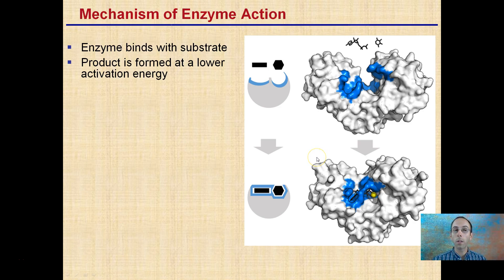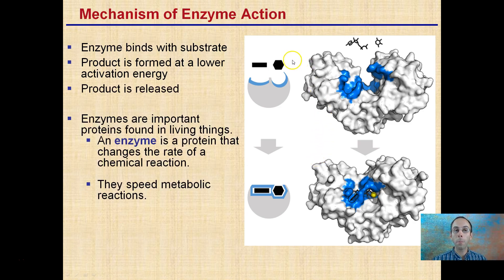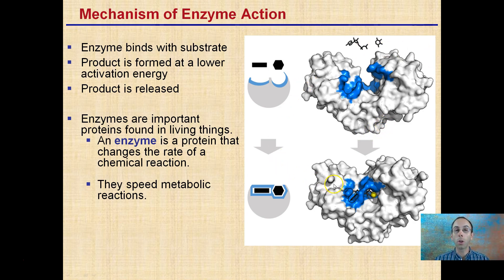Now, the mechanisms for enzyme action: the enzyme must bind to the substrate, the product is formed at a lower activation energy, and the product is then released. Enzymes are important proteins for living things — they change the rate of chemical reactions. They can speed up chemical reactions, allowing biological functions to occur at a much quicker rate and at reduced energy, allowing you to survive.